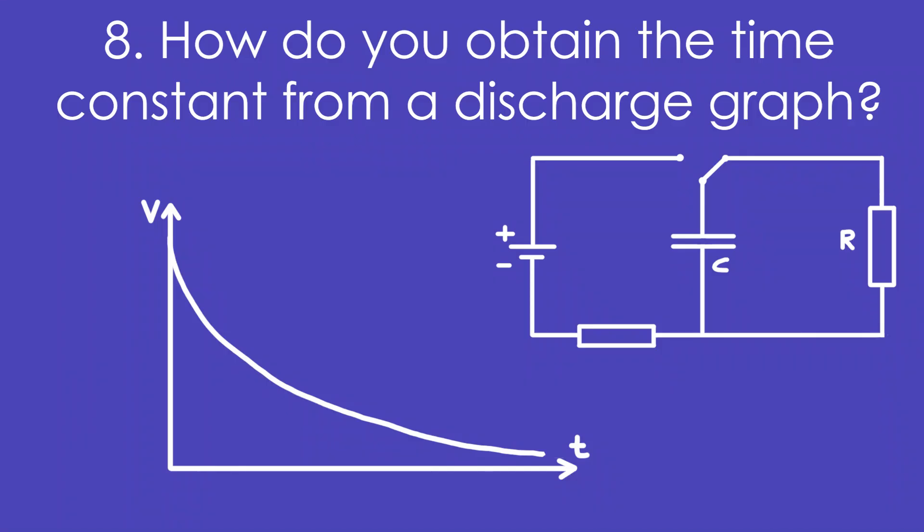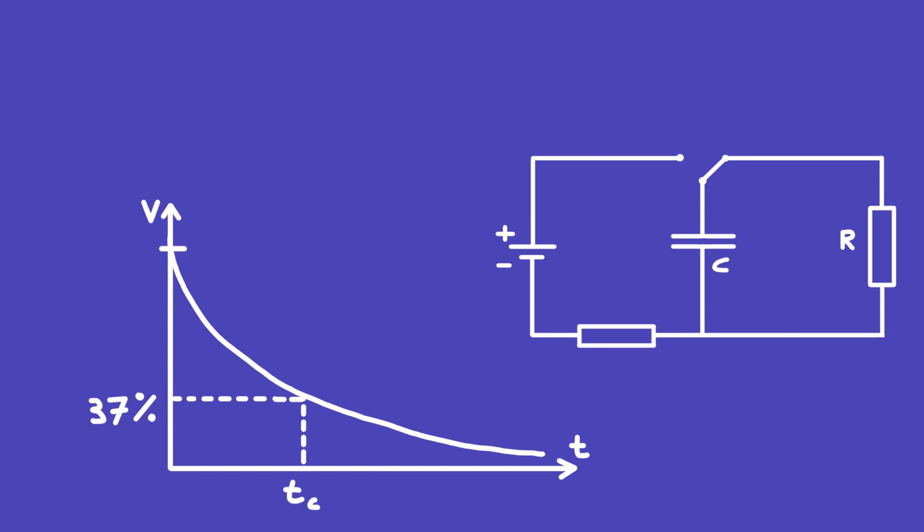Eight, how do you obtain the time constant from a discharge graph? You find 37% of an original value. It doesn't matter what value you pick though. And the time taken to do that is the time constant.